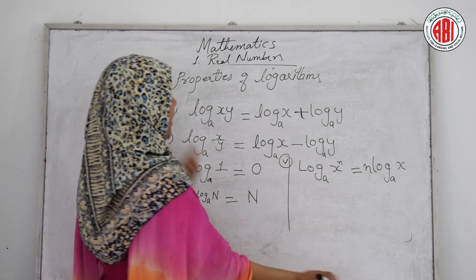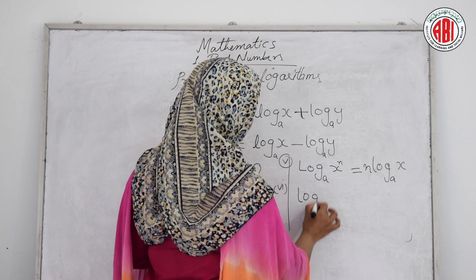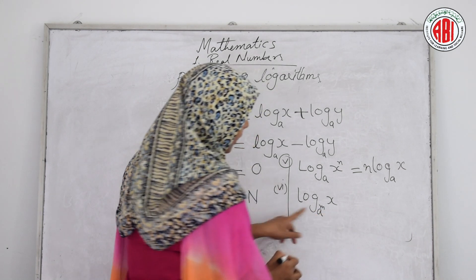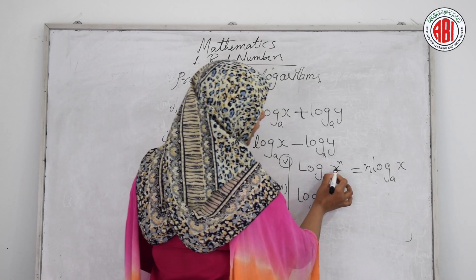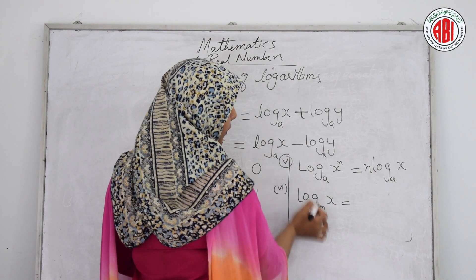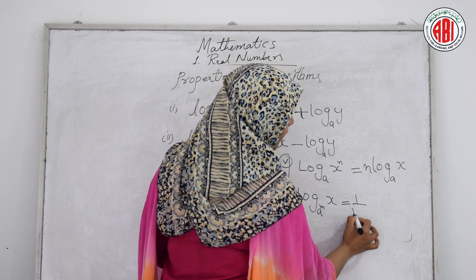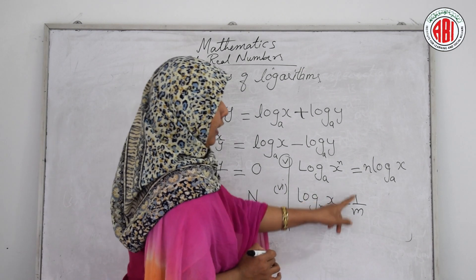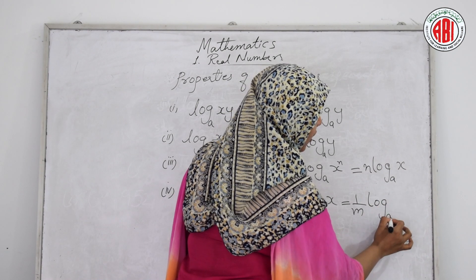The sixth property: if the base itself has an exponent — log base (a^m) of x — that exponent m is written as 1 by m on the outside. So log_(a^m)(x) = (1/m)·log_a(x). Notice the difference: x to the power n gives n out front, but base to the power m gives 1 by m.